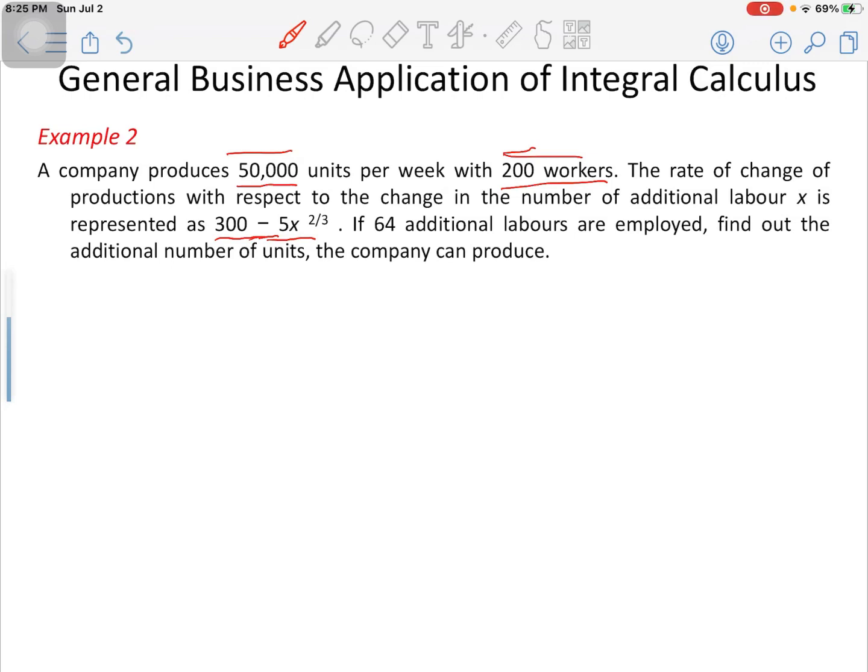Let's look at a second question. A company produces 50,000 units per week with 200 workers. The rate of change of production with respect to the change in the number of additional labor x is represented as 300 minus 5x to the power 2/3. If 64 additional laborers are employed, find the additional number of units the company can produce.